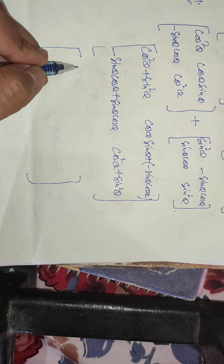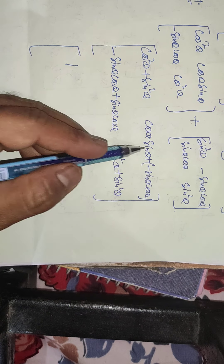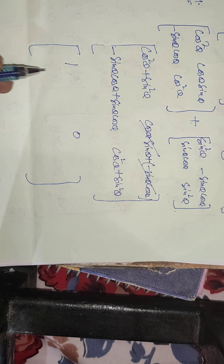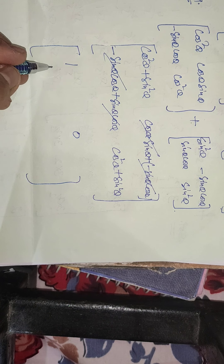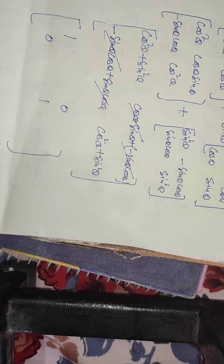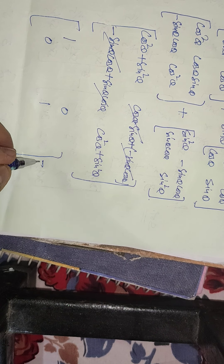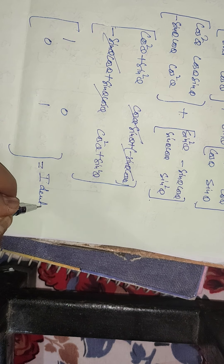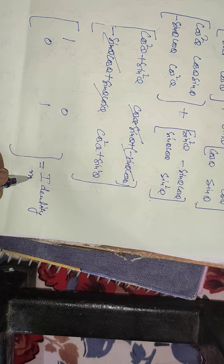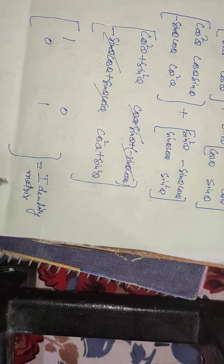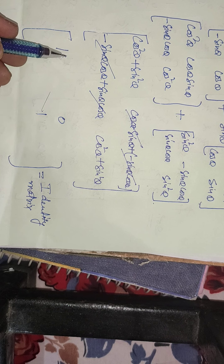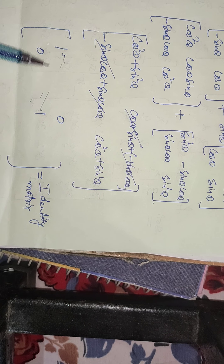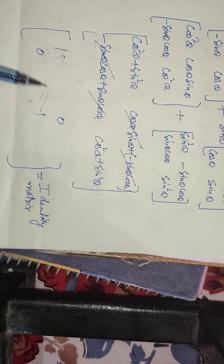The plus and minus sin θ cos θ terms cancel to give 0, and cos²θ plus sin²θ equals 1. So the diagonal elements are 1, 1 and the rest are 0. We call this the identity matrix, where the diagonal elements are 1 and the rest are 0.